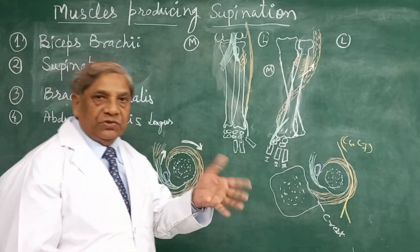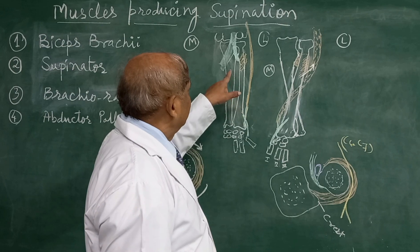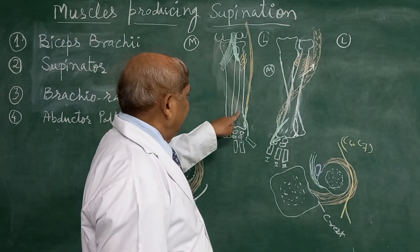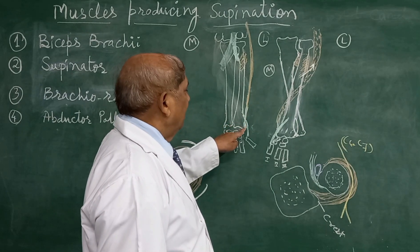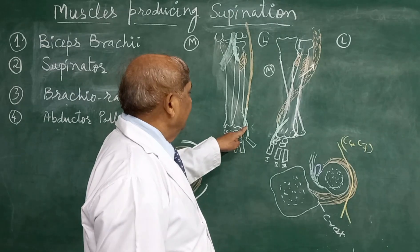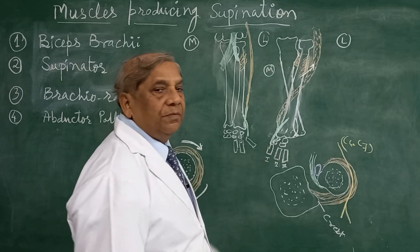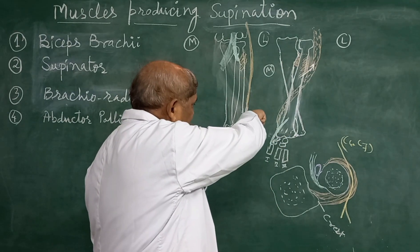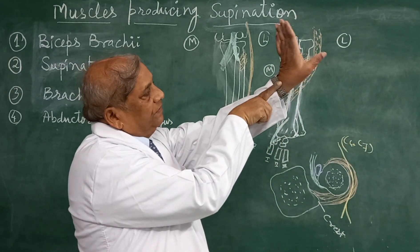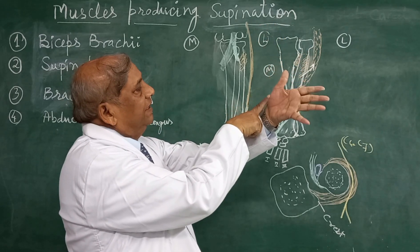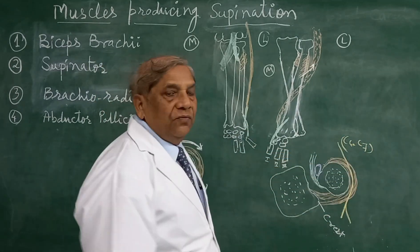The fourth muscle which will produce supination is the abductor pollicis longus. Because of its twisted traveling, this muscle comes from the posterior aspect of the radius — that means from the extensor compartment. It then lies onto the lateral surface of the lower end of the radius, and then goes and gets attached onto the base of the first metacarpal bone. From posteriorly it comes to the lateral and then winds down to get attached to the base of the first metacarpal bone.